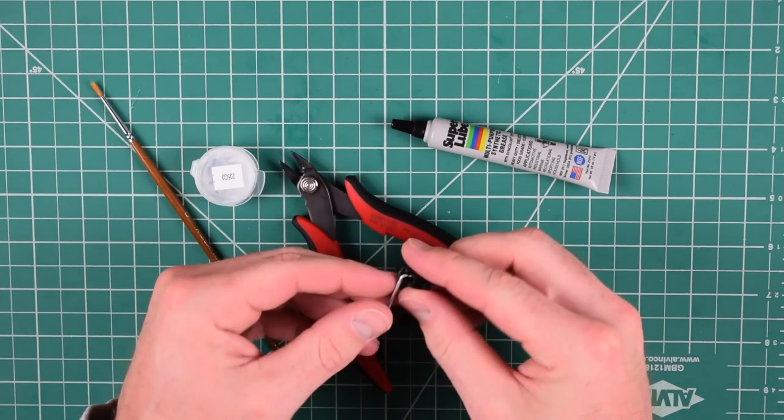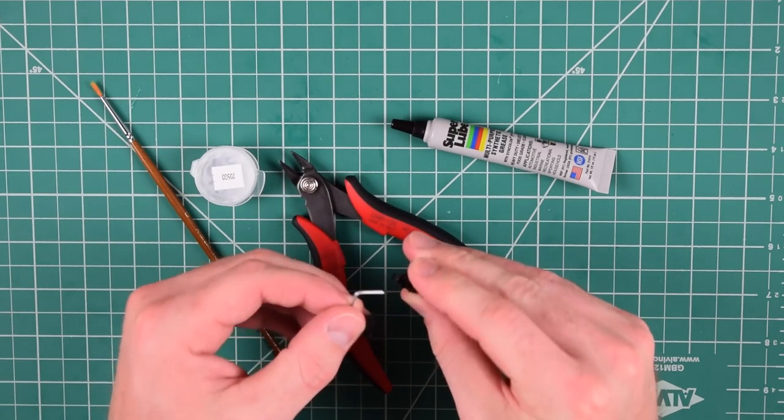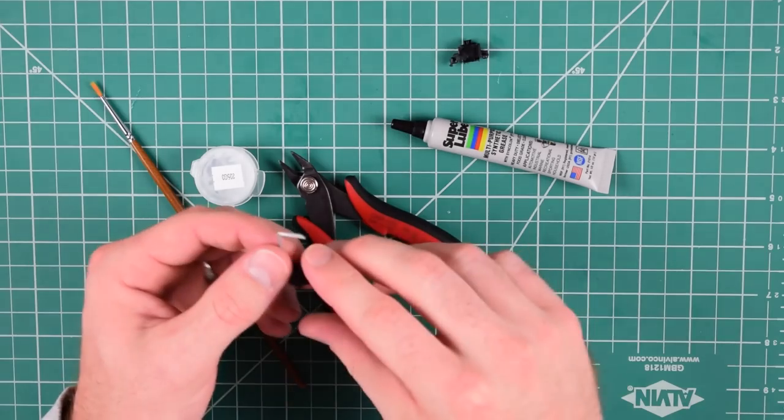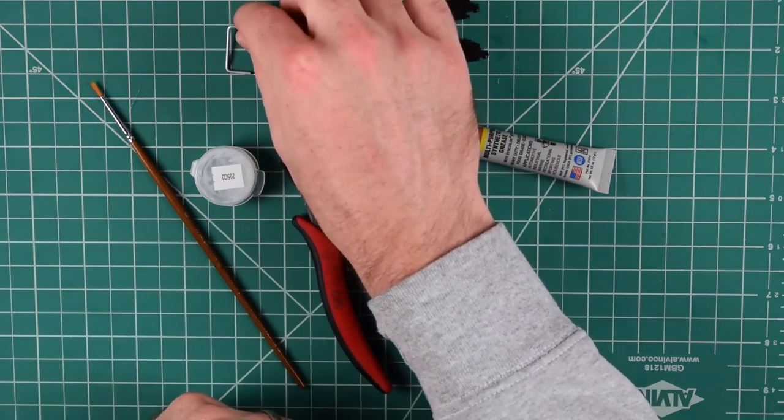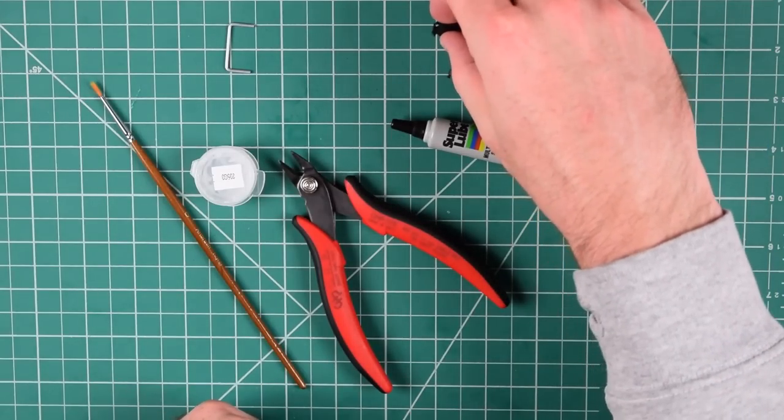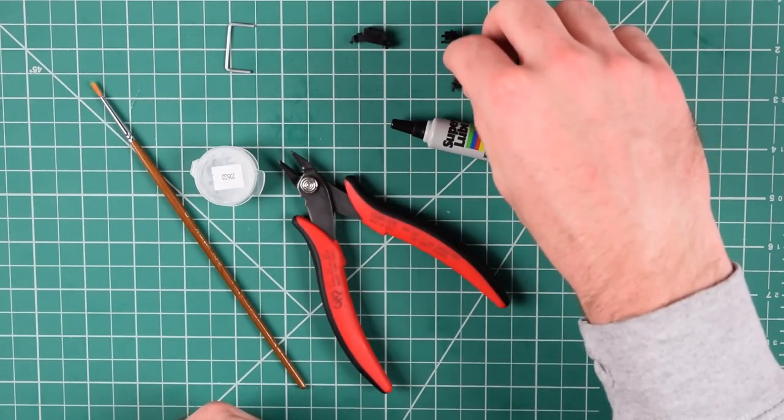To begin, disassemble the stabilizer by pulling the wire up and away from the housing. Place the wire aside. First, we'll clip the stabilizer.